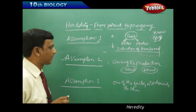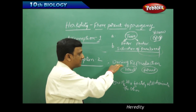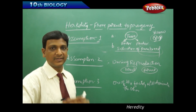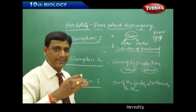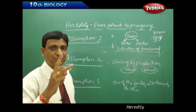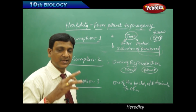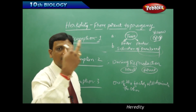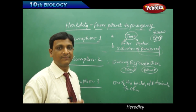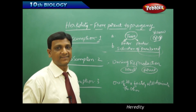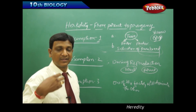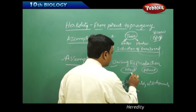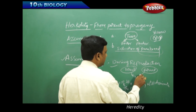Now let us see Assumption 2. His assumption is that during the reproduction process, characters are passed from the parent to the next generation in progeny. When passing the character, for each character there are two factors needed. These factors come one from each parent — father and mother. From father one factor, from mother one factor, both factors will come together, but only one character is represented — whichever factor is dominant, that character is expressed out and the other will be recessive. During reproduction, from each parent one factor is obtained.